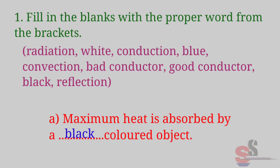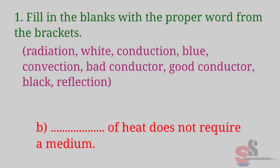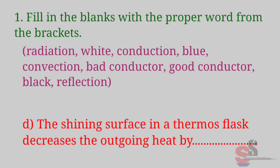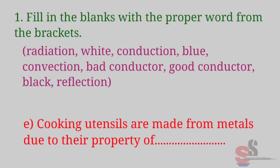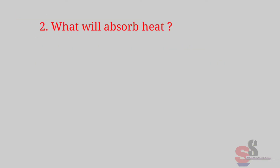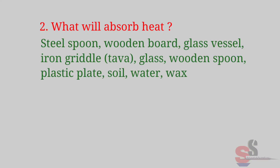Answers: (a) Maximum heat is absorbed by a black colored object. (b) Transfer of heat does not require a medium — radiation. (c) Conduction of heat takes place through a good conductor substance. (d) The shining surface in a thermos flask decreases the outgoing heat by reflection. (e) Cooking utensils are made from metals due to their property of conduction. (f) The earth receives heat from the sun by radiation.